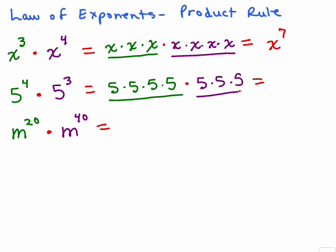And now I have, let's see, how many factors of 5? Seven factors of 5 so that's going to be 5 to the seventh.